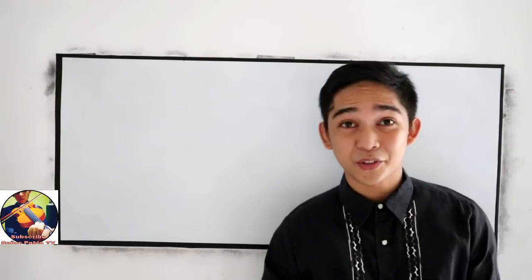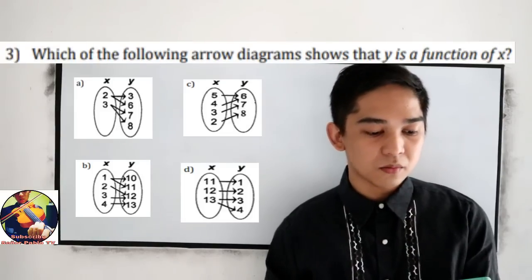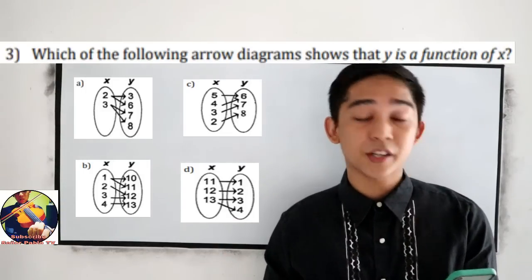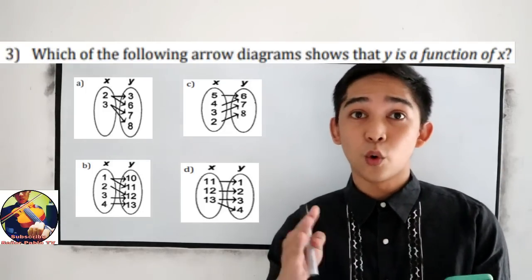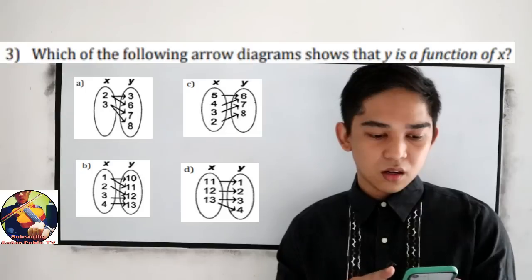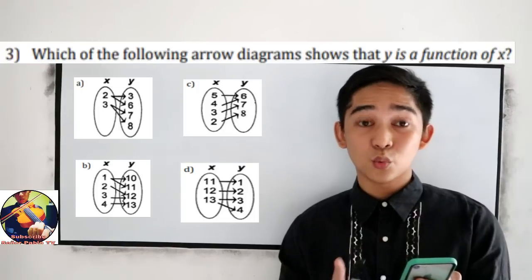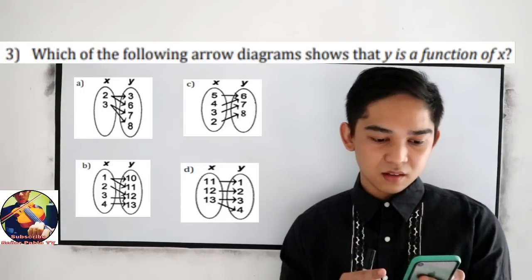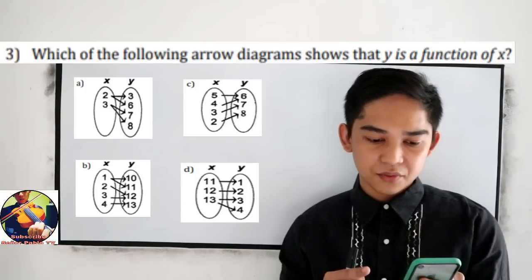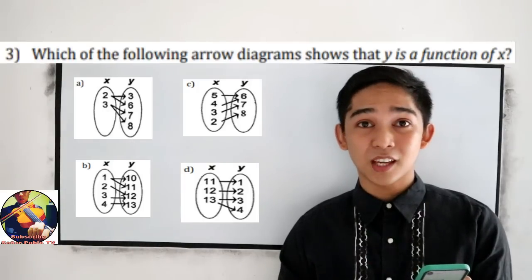Now let's proceed to number 3: Which of the following arrow diagrams shows that y is a function of x? We're dealing with correspondence. We know that a function can be 1-to-1 or many-to-1. Letter A is not our answer because the correspondence is many-to-1 — wait, letter B also has many-to-1, that's not a function. For letter C, we have 1-to-many, so that is a function. The answer in number 3 is letter C.